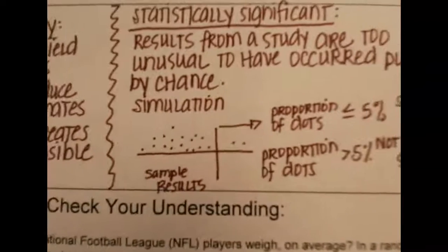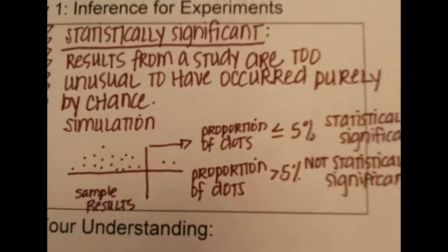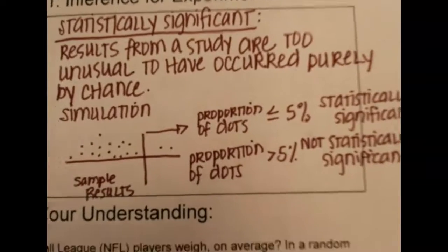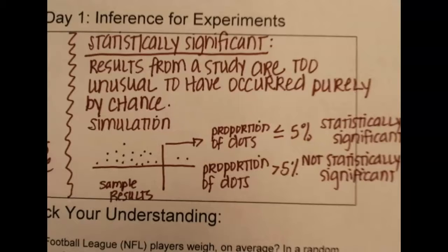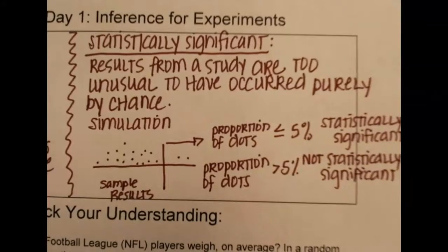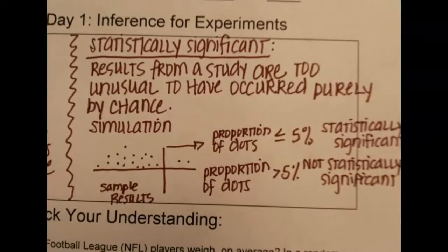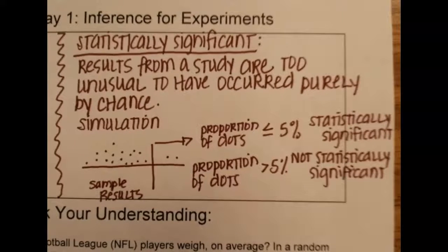Alright, the other part of this is just summarizing about statistically significant. This is a little bit of a review. So remember statistically significant results from a study are too unusual to have occurred purely by chance. Yes, it's possible, but it's really, really, really unlikely.